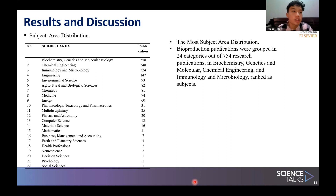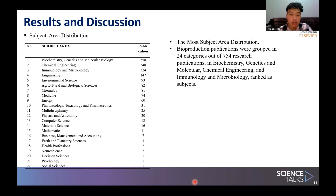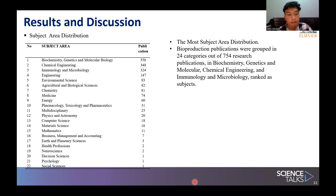Regarding subject area distribution: the most prominent subject area distribution of bioproduction publications were grouped in 24 categories out of 754 research publications. Biochemistry, Genetics and Molecular Biology ranked first with 558 publications; Chemical Engineering ranked second with 348 publications; and Immunology and Microbiology ranked third with 324 publications.